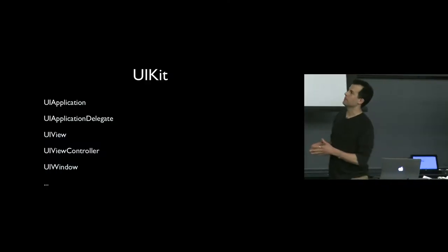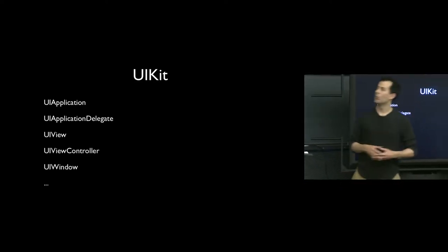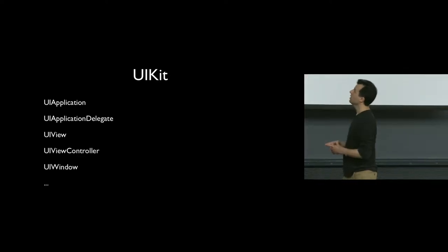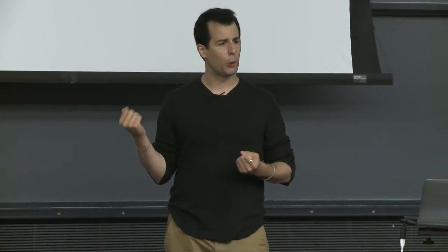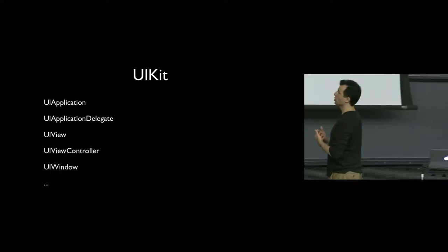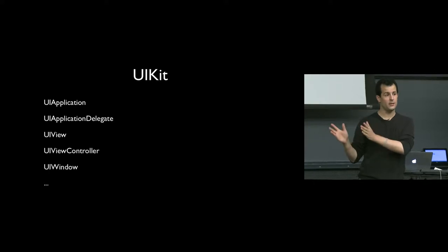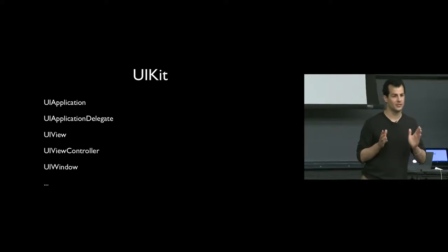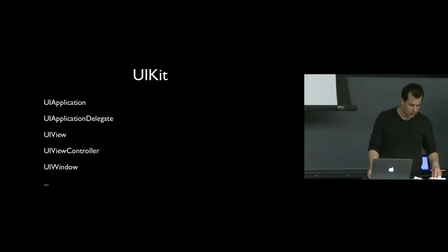UIKit is the user-interface-related SDK Apple provides. Key classes include: UIApplication (describes an iOS application), UIApplicationDelegate (similar, relating to delegation and protocols), UIView (represents something on screen — a rectangle, button, or text field), UIViewController (the Controller/C in MVC — the brains of the application, not the view), and UIWindow (the rectangular piece of glass your application runs inside).